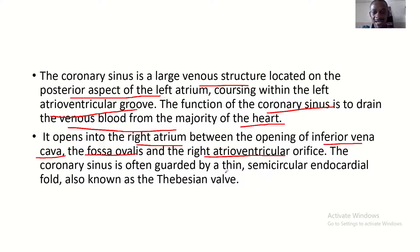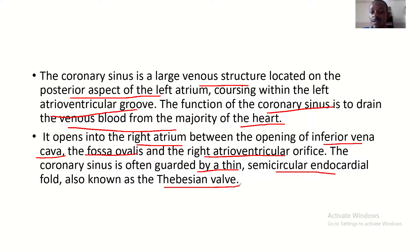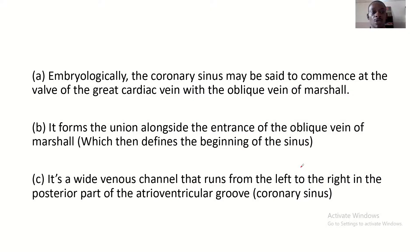The coronary sinus is often guided by a thin semi-circular endocardial fold, also known as the Thebasian valve. It opens into the right atrium between the opening of the inferior vena cava, the fossa ovalis, and the right atrioventricular orifice. Let's locate where the coronary sinus is on the diagram — this is where the coronary sinus is.